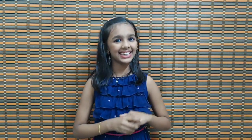At the beginning we have a description from the Baburnama, written about Babur. Let's read it: 'Hindustan is a wonderful land. Compared to other countries it is entirely different. The mountains, rivers, forests and deserts are unique. The animals, plants, people, languages, rain and wind are all diverse.' Here it talks about Hindustan or India and the diversity of its rivers, mountains and ranges in medieval times.